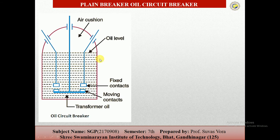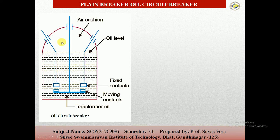These are the basic constructions. These two are the fixed contacts, this one is the moving contact, and this is the transformer oil. This base is the air cushion. When a fault occurs, the circuit breaker opens. At that time the contact moves downward and the arc is generated. The arc is generated by oil chemical reactions, producing bubbles in the tank. After the force of the oil, the arc is quenched.